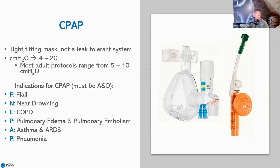CPAP should use a tight-fitting mask with no leaks, otherwise you cannot maintain good positive pressure. The adult protocol range is 5 to 10 centimeters of water—that's the PEEP. These are adjustable PEEP valves: the top blue is 5, yellow is 7.5, and green is 10. You simply turn the dial at the top to change the PEEP setting. An average PEEP for a patient on CPAP would be somewhere around 5 to 10 centimeters of water.